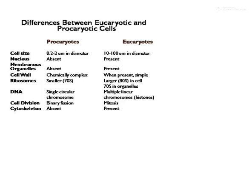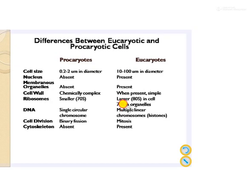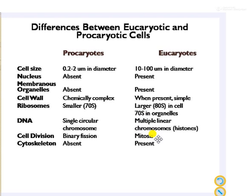Now let us look at the exact differences in a comparison. Prokaryotes range from 0.2 to 2 microns in diameter, whereas eukaryotes are much larger — 10 to 100 microns. The nucleus is absent in prokaryotes but present in eukaryotes. Membrane-bound organelles are absent in prokaryotes but present in eukaryotes. The cell wall is chemically more complex in prokaryotic cells, but simpler in eukaryotes. Smaller ribosomes are present in prokaryotes, while larger ribosomes are present in eukaryotes.